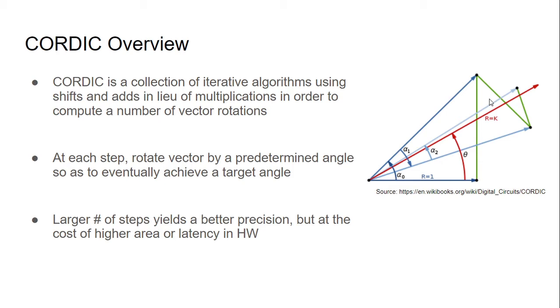However, you have to be aware that a larger number of steps yields better precision, but at the same time, you're going to either use higher area or latency, depending on your architecture. So if you have a pipelined CORDIC, then you're going to have greater area usage as you have more flip-flops and shifters and adders in there. If you have just a single iterative algorithm that has a very high initiation interval, then you're going to have a lot of latency as you wait, say, 48 cycles for the CORDIC to be done.